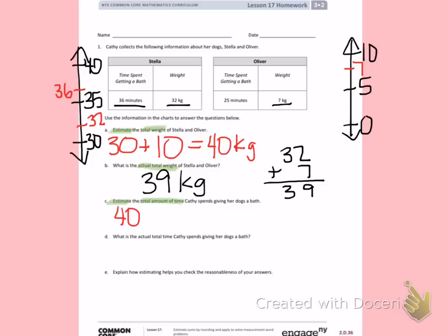I'm going to make a new number line for the amount of time Oliver gets a bath, which is 25 minutes. So over here I would fit 25 between 20 and 30, and 25 is the halfway number. Since I'm already at the halfway number, I am going to continue to round up to 30. Again, I'm being asked to find the total, so I'm going to add those two numbers together, which is going to give me 70 minutes as my estimate.